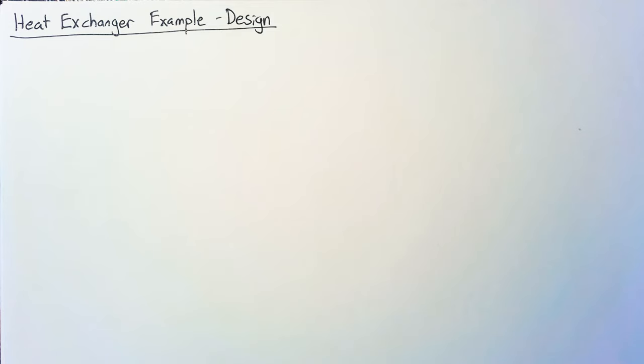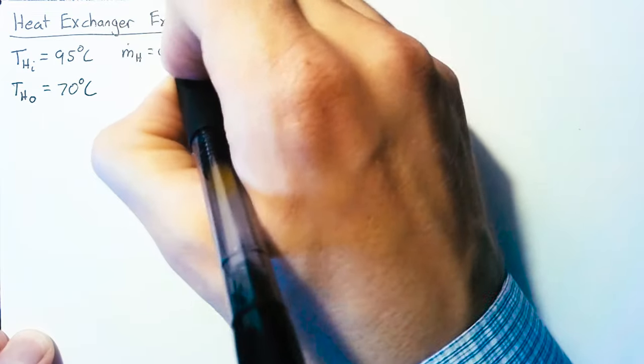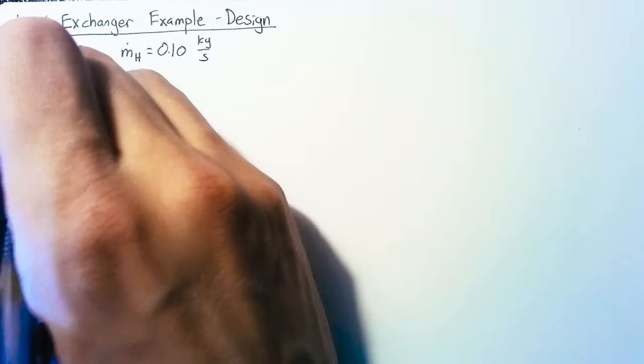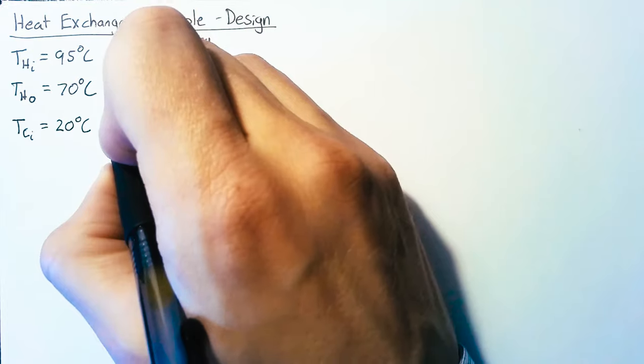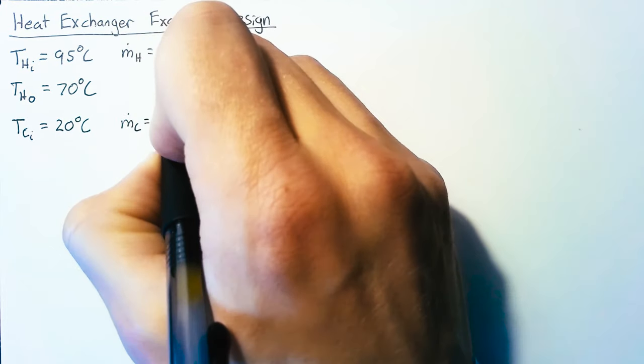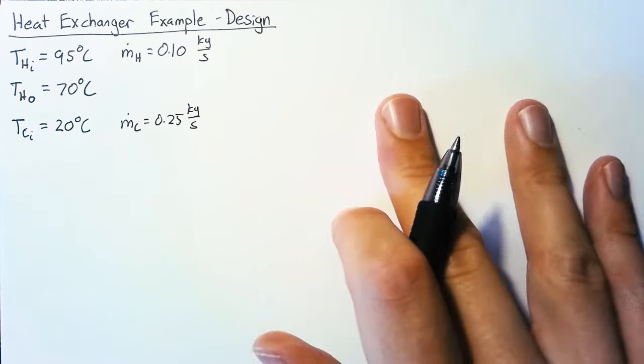This is a design problem because we're going to know what we want our heat exchanger to do and we're going to figure out what some of the parameters of that heat exchanger need to be. The first criterion is it will cool water from 95 degrees Celsius to 70 degrees Celsius at a mass flow rate of 0.1 kilograms per second. The coolant coming in is at 20 degrees Celsius and we're pumping it at a mass flow rate of 0.25 kilograms per second.